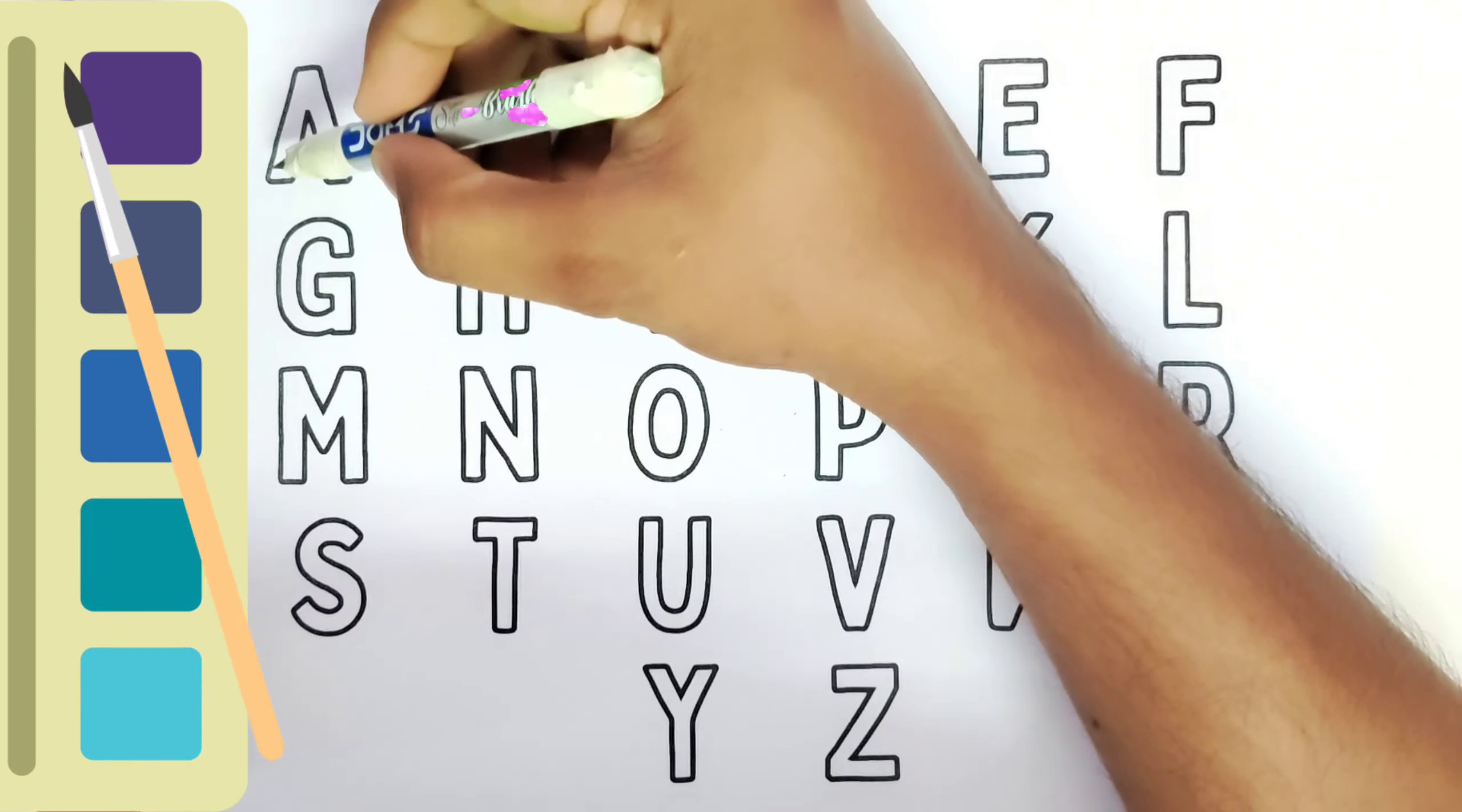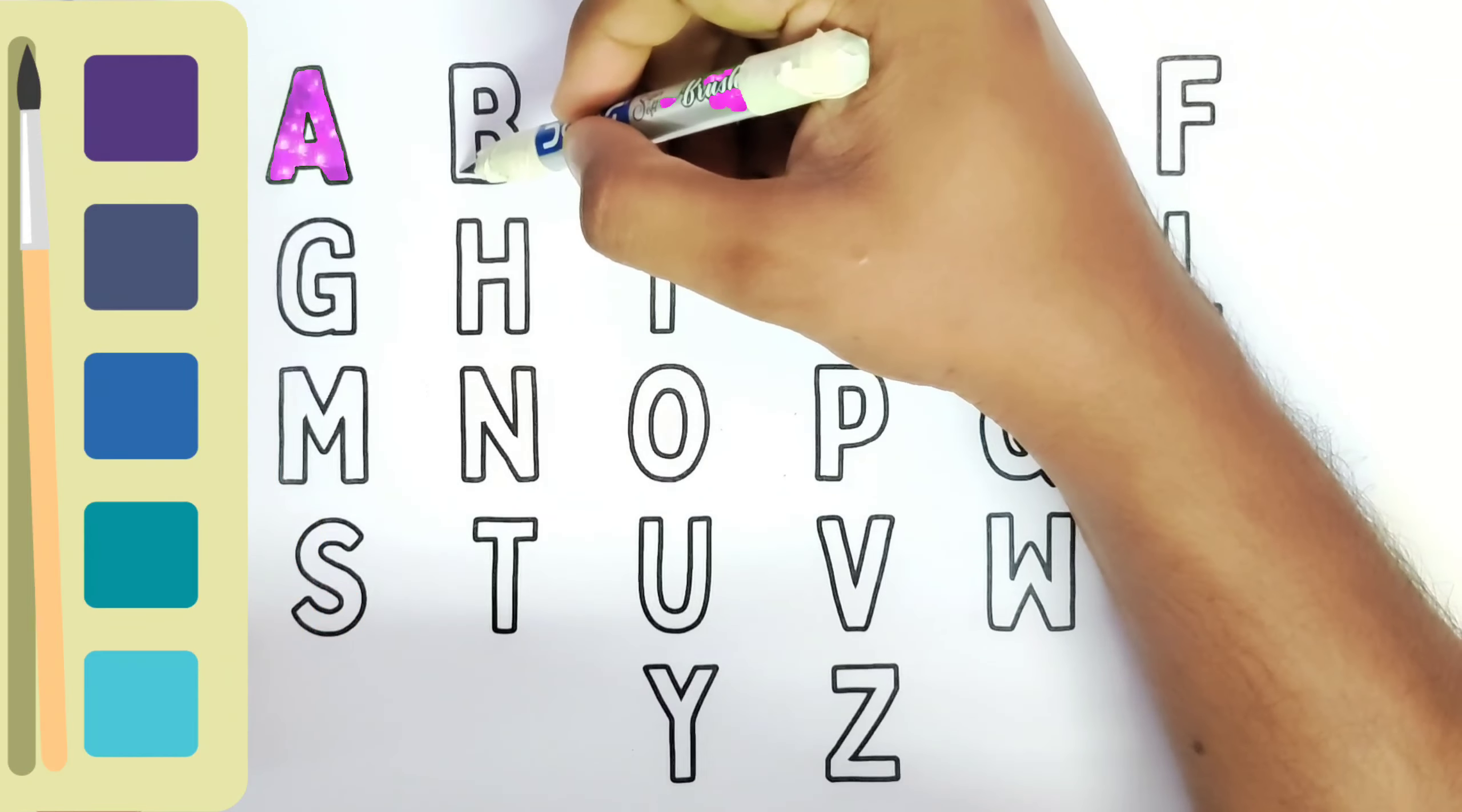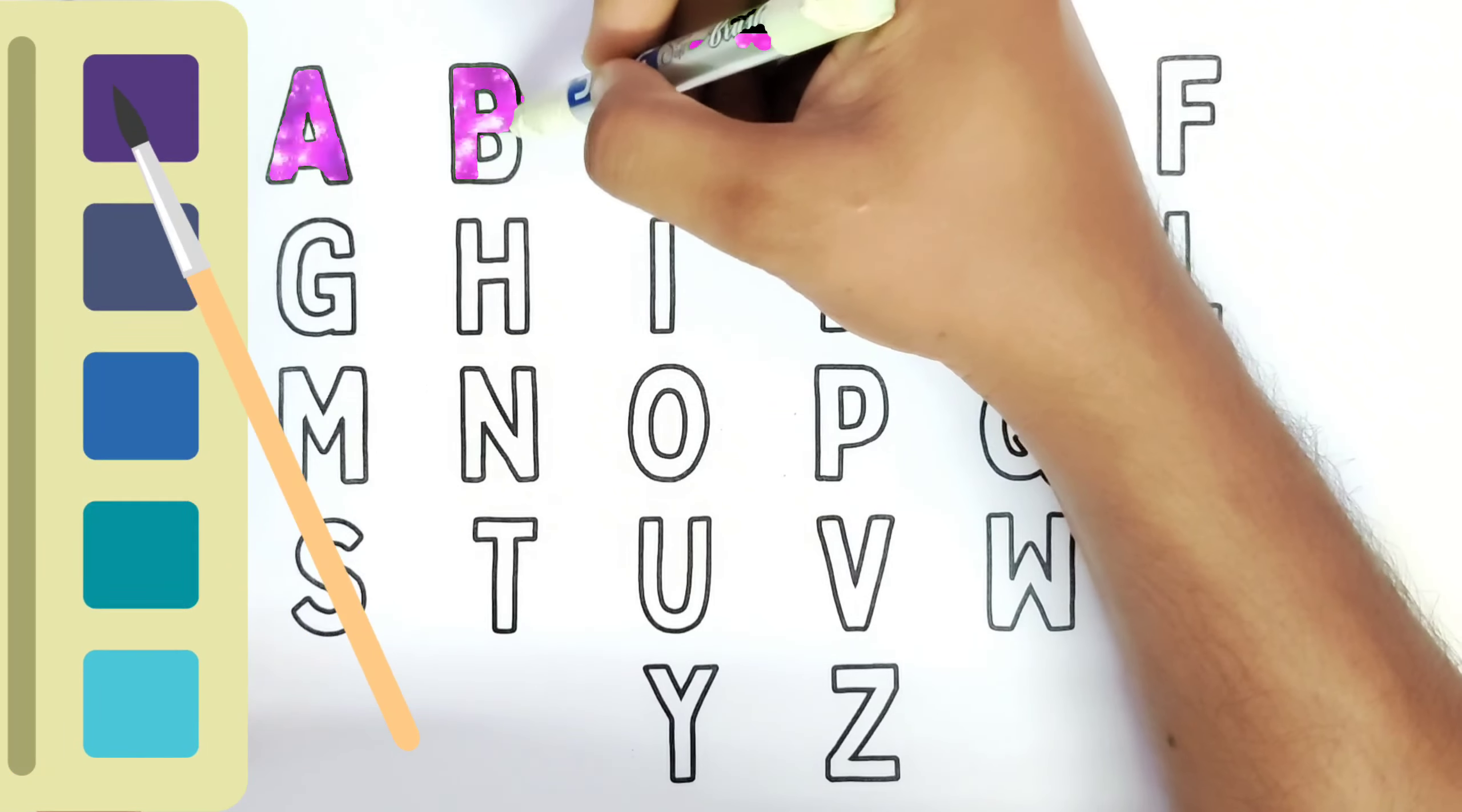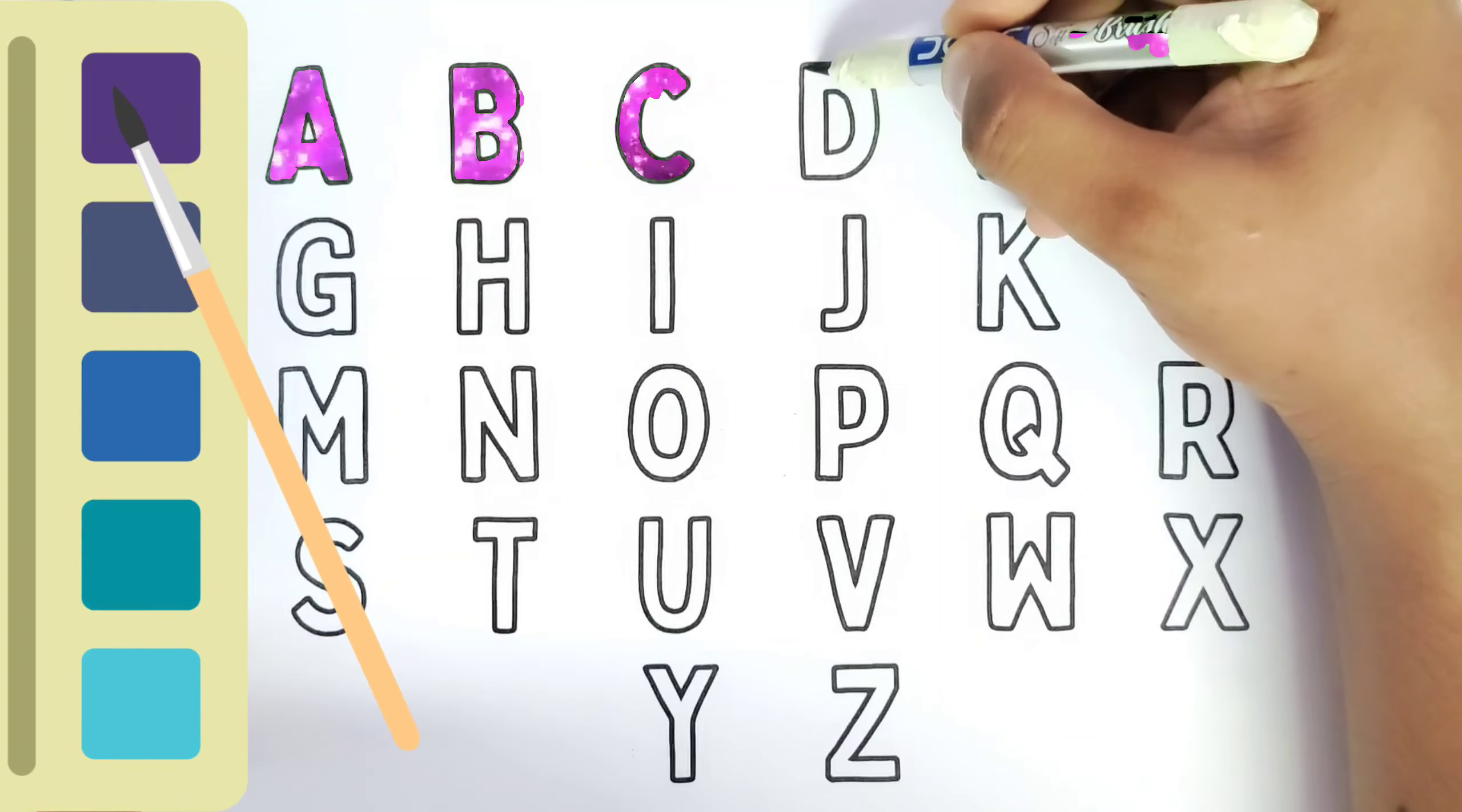This is A. A for Apple. A, A for Apple. B, B for Ball. C, C for Cat. D, D for Dog.